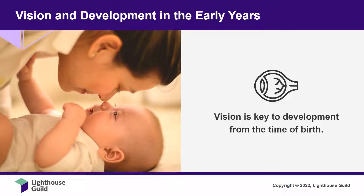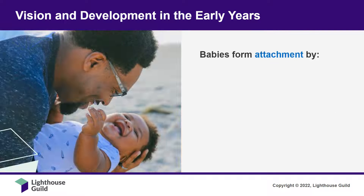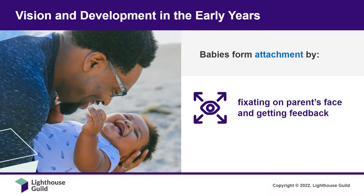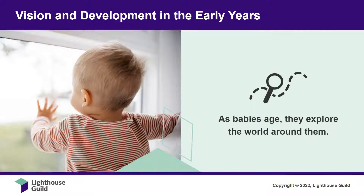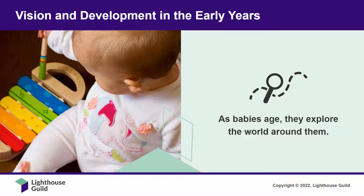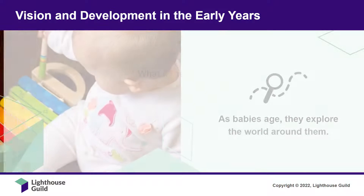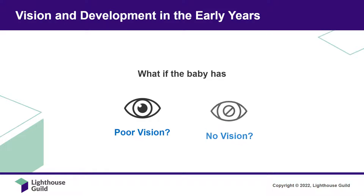Vision is key to development from the time of birth. It is the primary way most infants and children gather information and learn about the world around them. For example, babies form attachment with their parent or primary caregiver by fixating on their face and getting visual feedback and positive reinforcement, like sharing a smile. As babies age, they begin to observe and become curious about the people and the things around them. This motivates them to reach, roll over, and eventually crawl and walk, in order to get to something like a toy. But what if the baby has poor vision, or no vision at all?